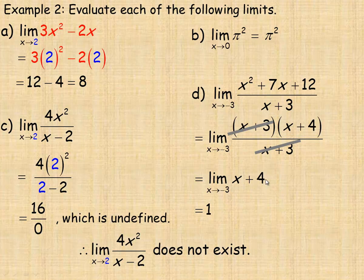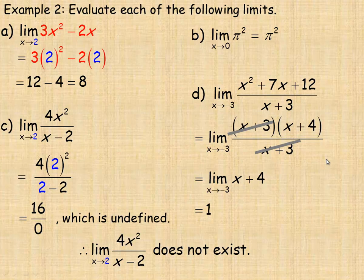If you were to graph this function, you would actually have a hole in the graph at x equals negative 3. But as you approach from either side, the limit equals 1. You can graph that and check what it looks like.